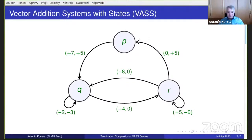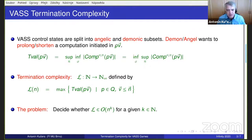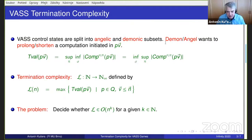A VAS is a VAS — everybody knows what that is. We have control states, transitions, counter updates, and I assume all complexity results are about counter updates encoded in binary. We split the set of control states into two disjoint subsets of angelic and demonic control states, controlled by two players. The demon wants to prolong the computation of the VAS while the angel aims at shortening it.